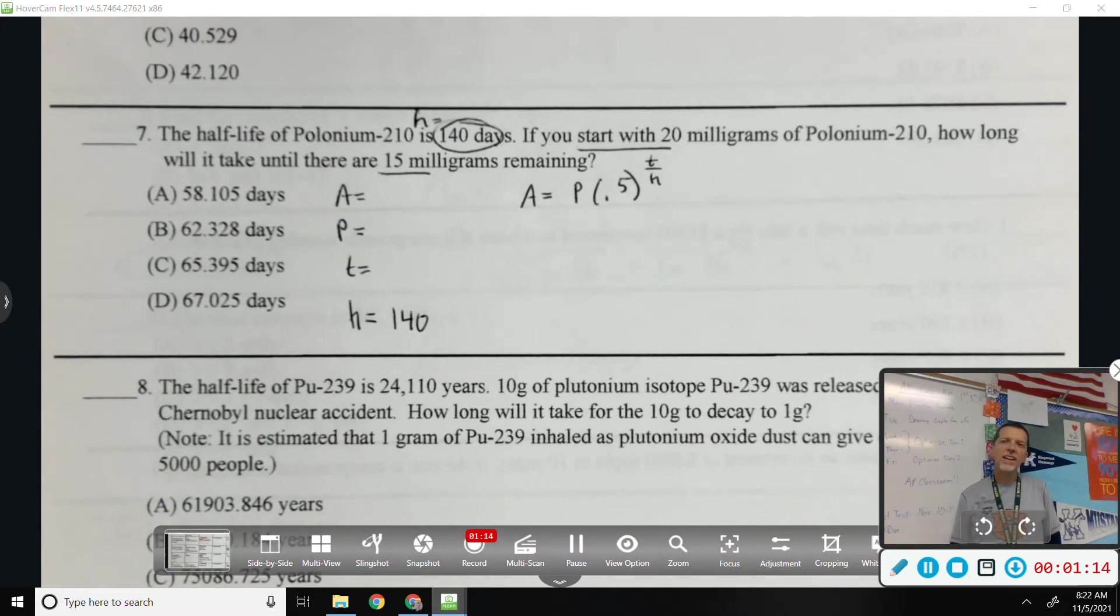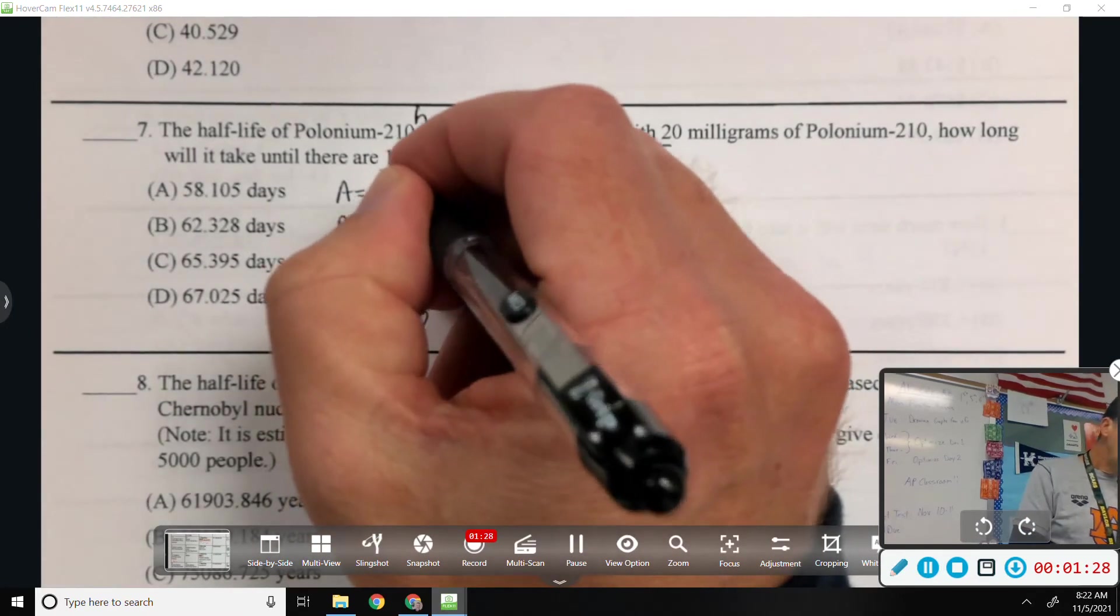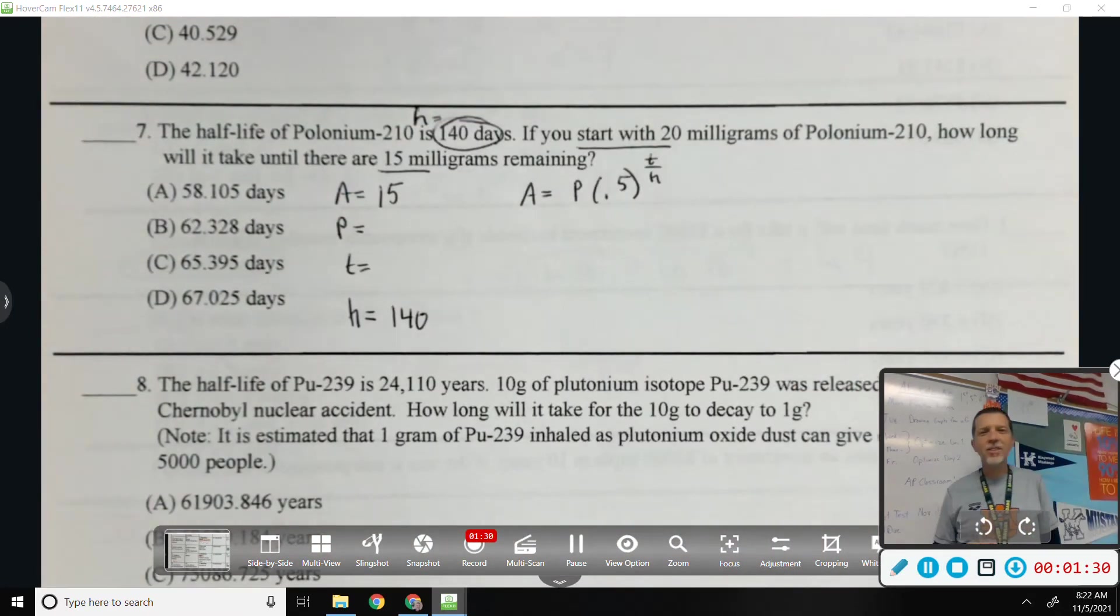What's the A? It is the amount. What do I like to say A stands for? After. After. So which number is the after number? 15. P is the principal, but I like to say it's the pre. So what's the pre number? 20.